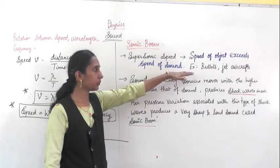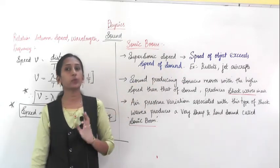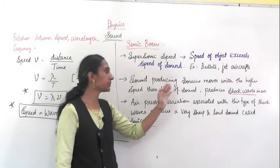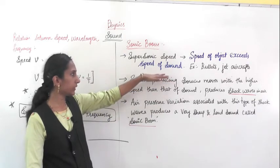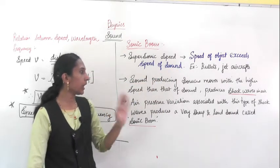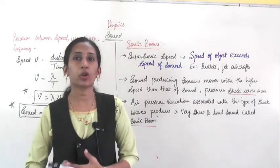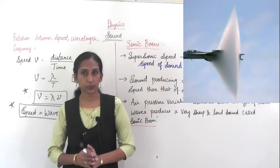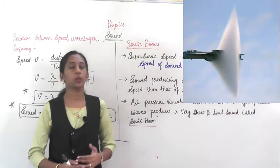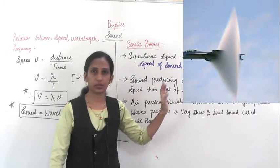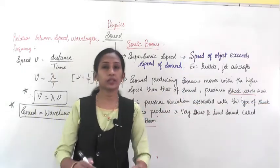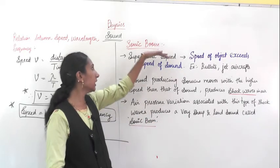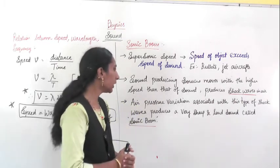Now, what happens with bullets and jet aircraft? They produce shock waves. When a sound-producing source moves with a higher speed than that of sound, it produces shock waves. When the speed of an object is higher than the speed of sound, it produces waves called shock waves. When shock waves are produced in air, there is a variation in air pressure. These shock waves are very high power waves. Because of this air pressure variation caused by these sharp, very loud shock waves, it is called a sonic boom.